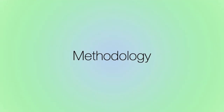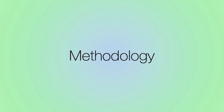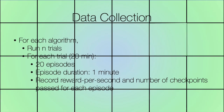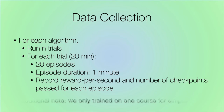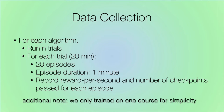What is our methodology? To compare the learning speed of the two algorithms, we will need to design an experiment. We collect data by running N trials for both DeepSarsa and DeepQ Learning. Each trial is 20 minutes long, consisting of 20 episodes that are one minute long. At the end of each episode, we record two pieces of data: the average reward per second and number of checkpoints passed.